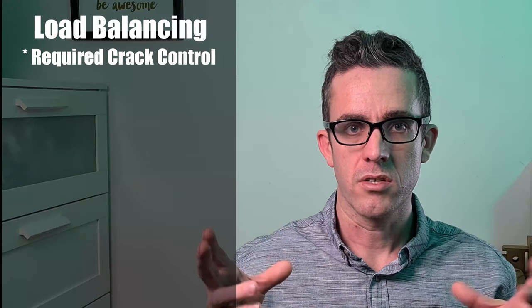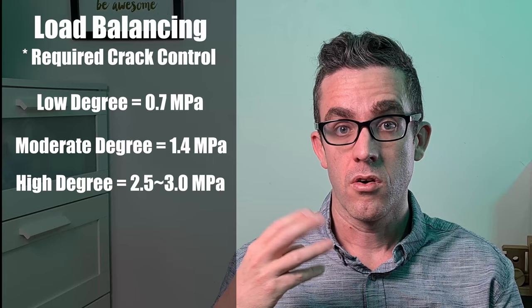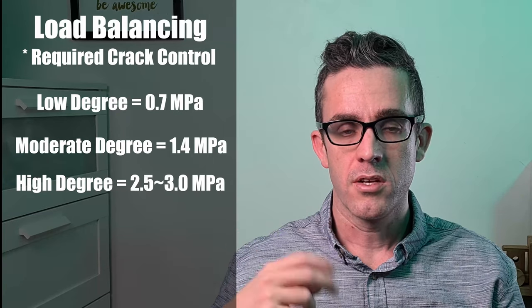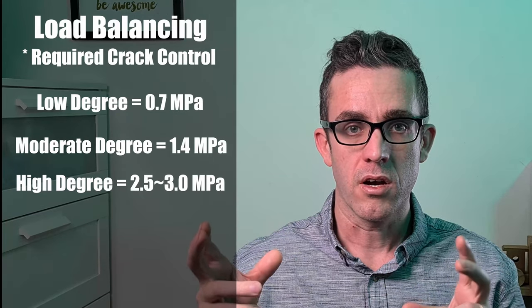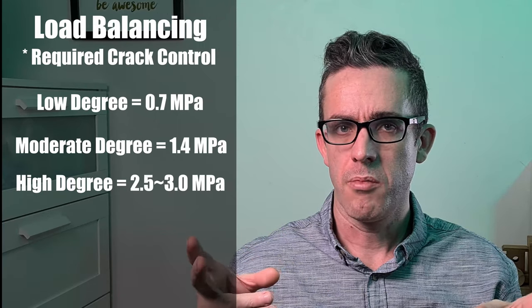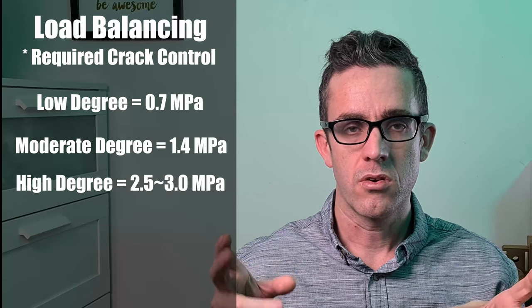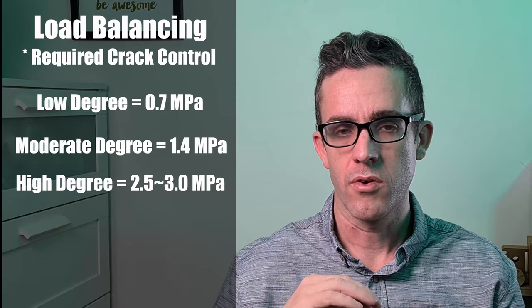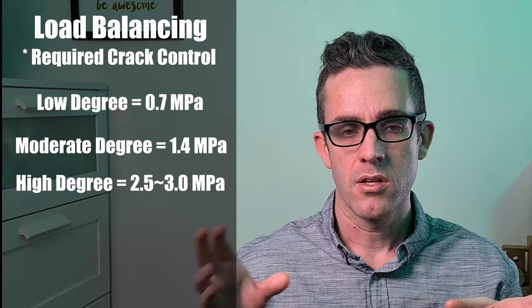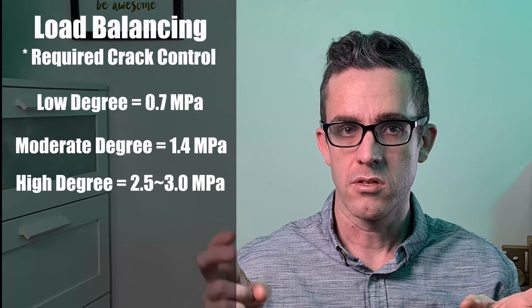The PNA is really to do with crack control. So do we need a low degree of crack control, moderate degree of crack control or high degree of crack control? And these are applied depending on what degree of crack control we need inside our structure. So low degree of crack control is roughly about 0.7 MPa and this is generally used in areas where we're not too concerned about shrinkage cracking. So if we've got carpeted surfaces inside a car park or other areas where minor degrees of cracks are not really a concern inside our structure.